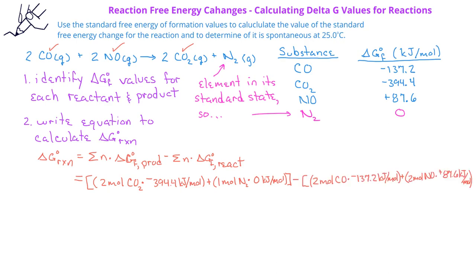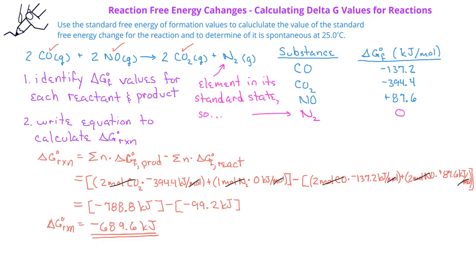For the reactants, we have 2 moles multiplied by −137.2 kJ/mol for carbon monoxide, and we add 2 moles multiplied by +87.6 kJ/mol for NO gas. We then have −788.8 kJ for the products minus −99.2 kJ for the reactants, which gives us a standard free energy change of −689.6 kJ.